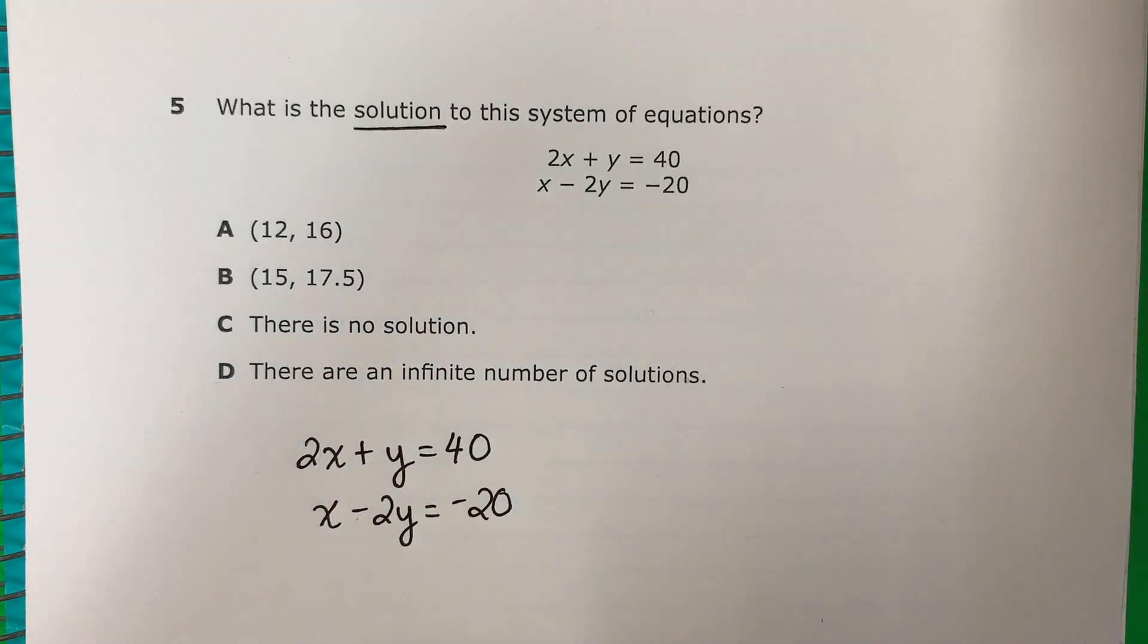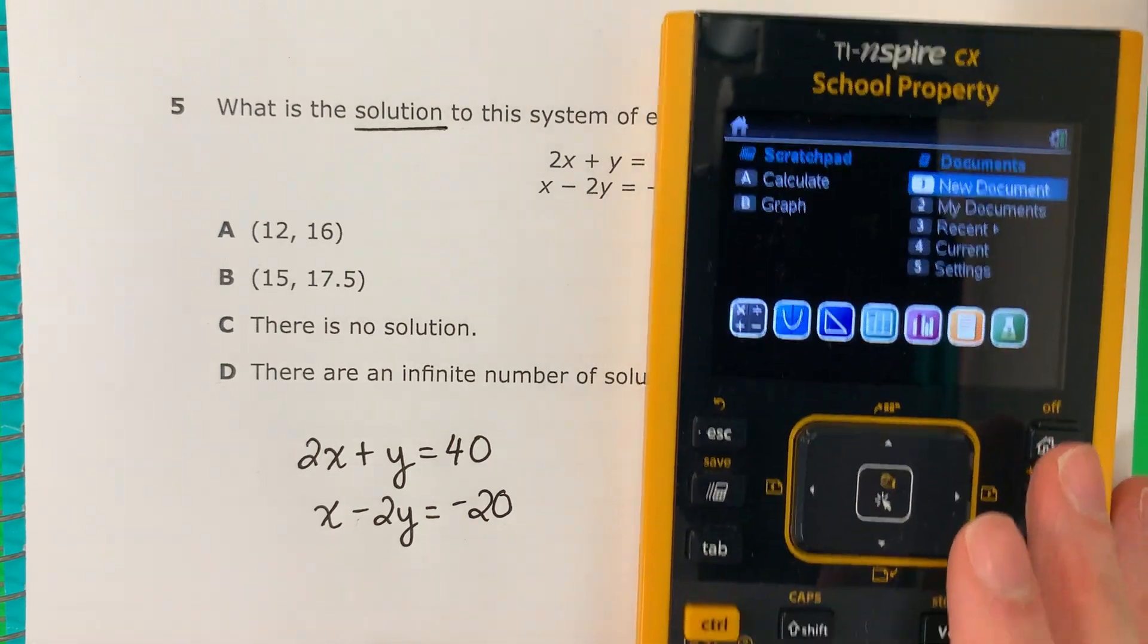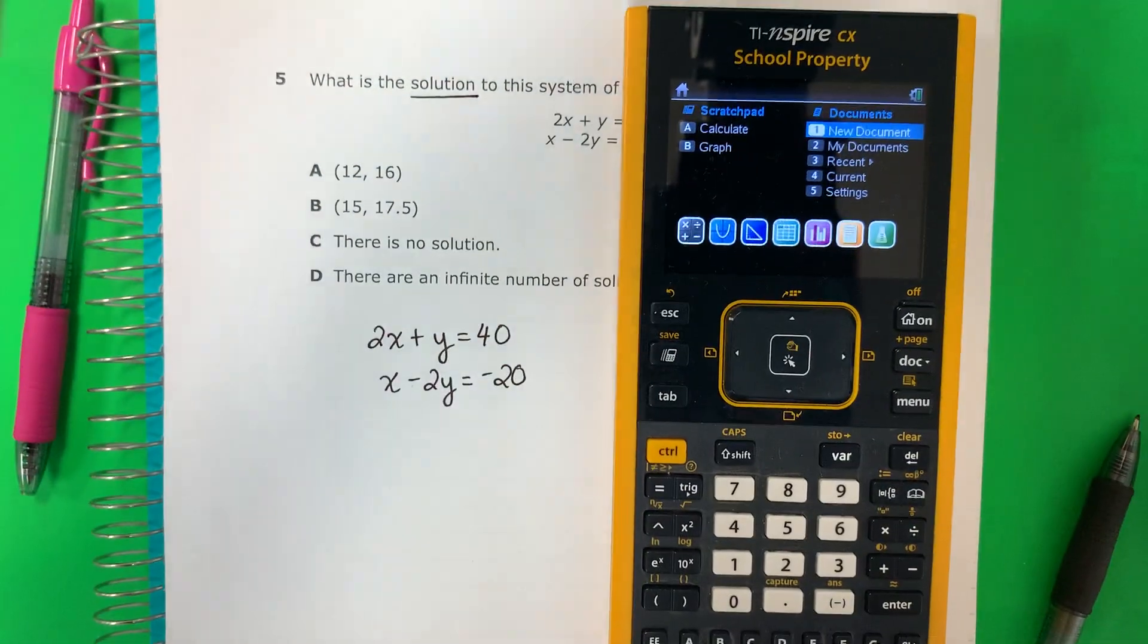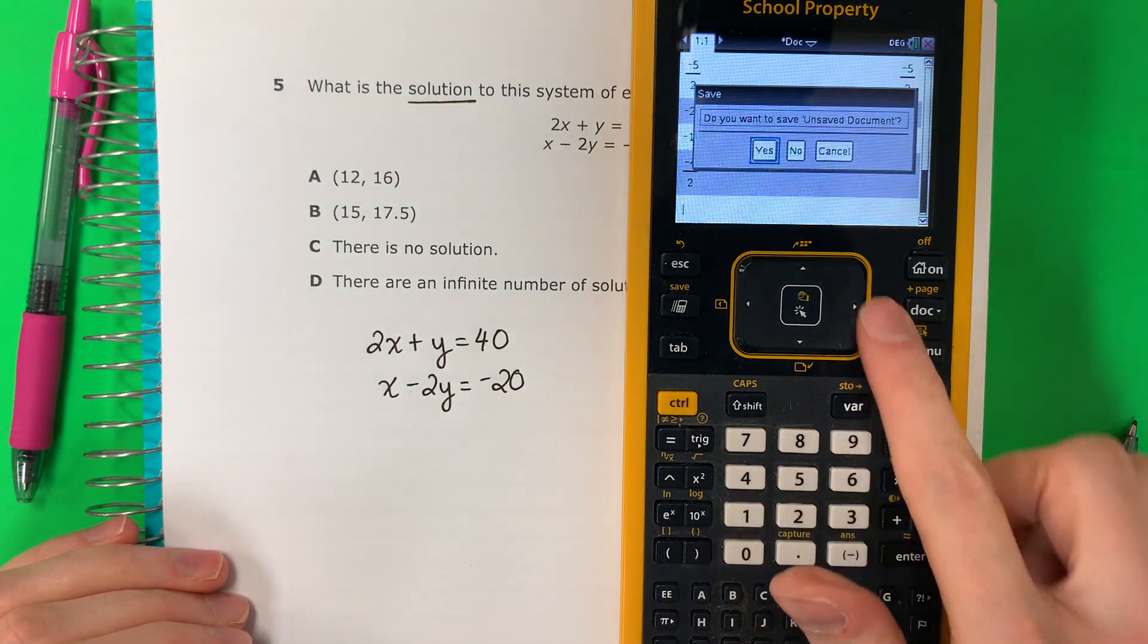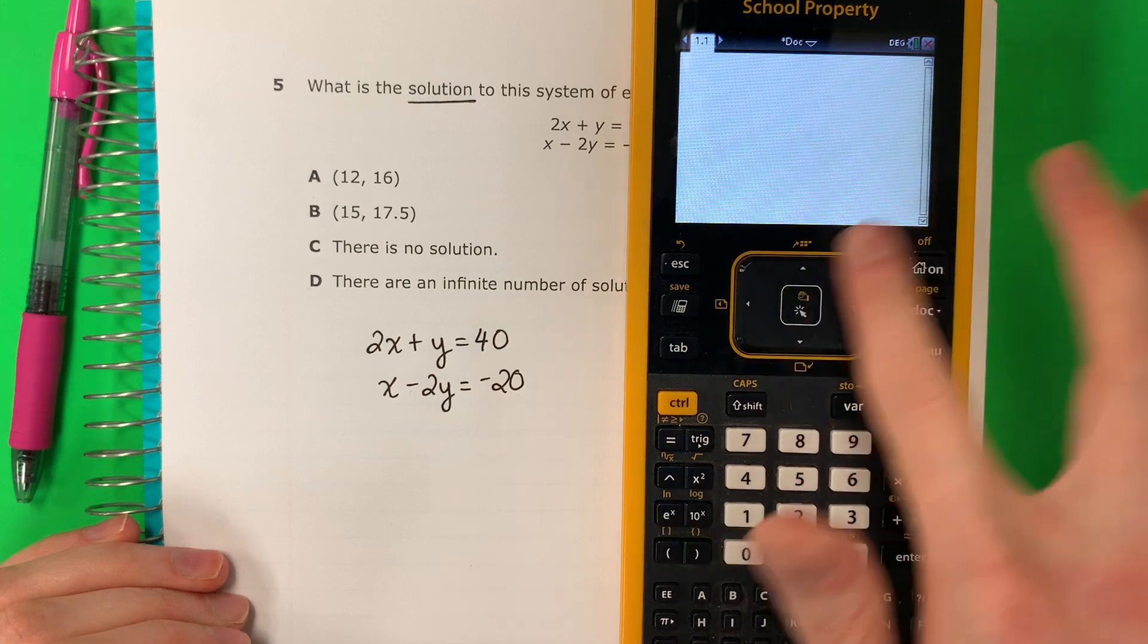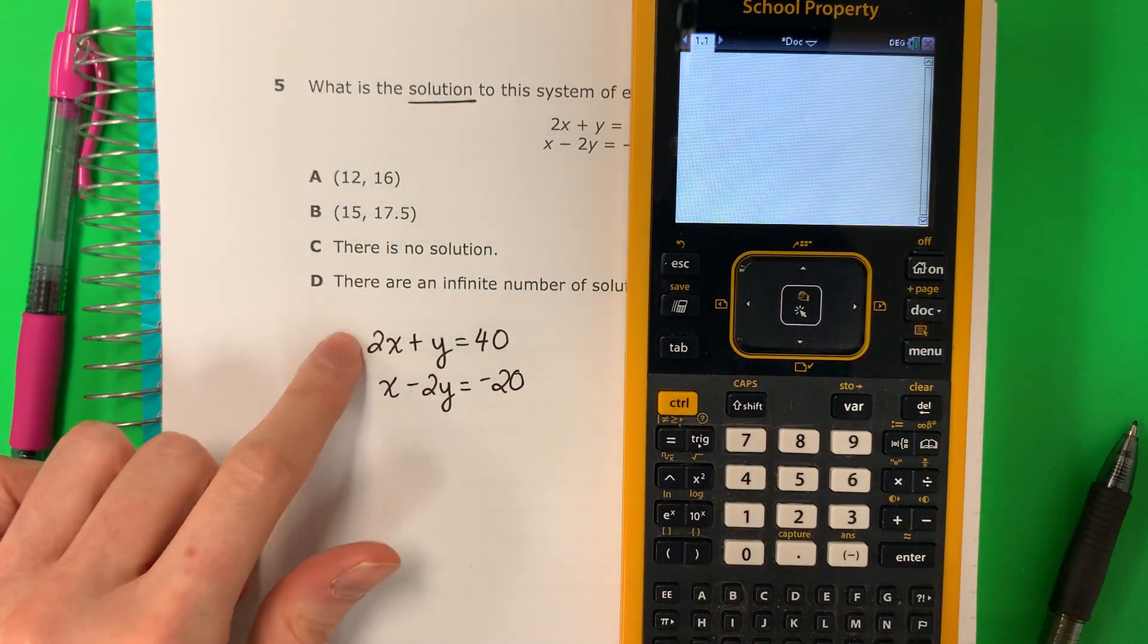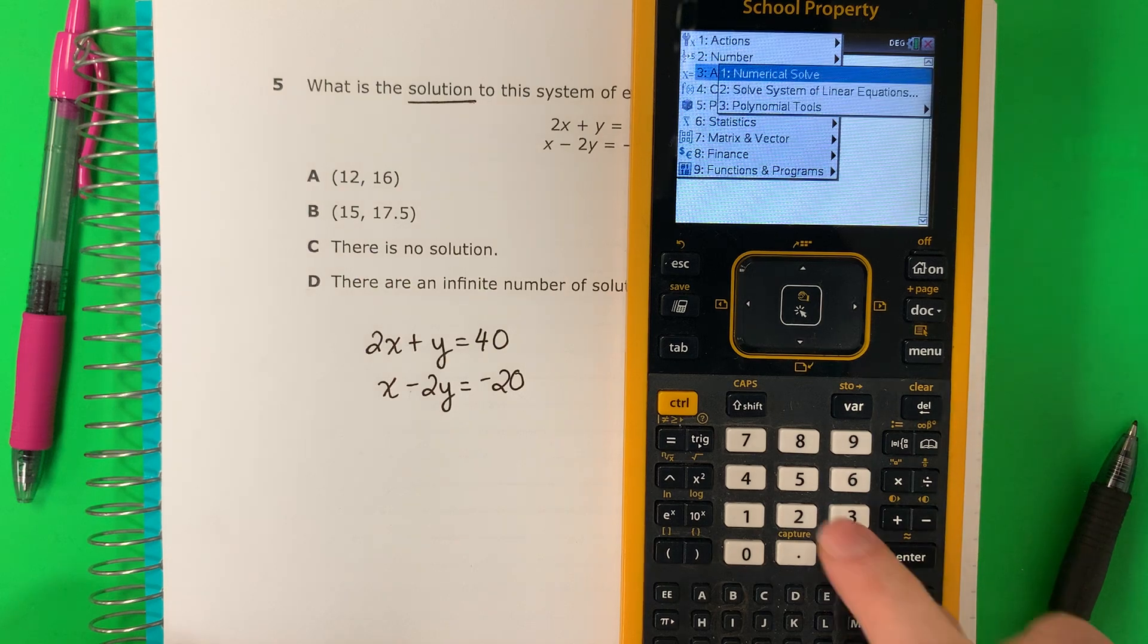So let's go ahead and grab our calculator. We are going to be using a TI-Nspire. So let me go ahead and go up a little bit here. So here you're going to go ahead and push 1, 1, then no, 1. So you will be here. So to answer this, you would do menu, 3, 2.